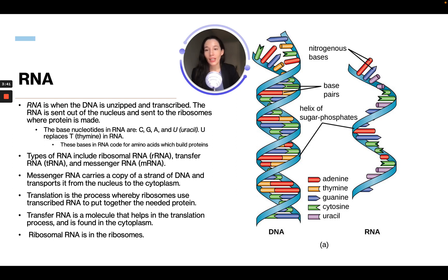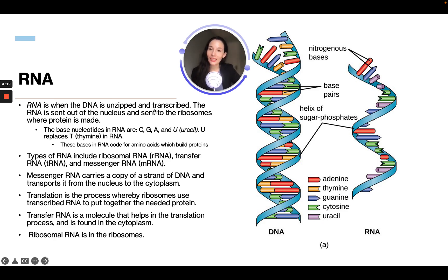Types of RNA include ribosomal RNA, transfer RNA, and messenger RNA. Messenger RNA carries a copy of a strand of DNA and transports it from the nucleus to the cytoplasm. Translation is the process where ribosomes use transcribed RNA to put together the needed protein. Transfer RNA is a molecule that helps in the translation process and is found in the cytoplasm. Ribosomal RNA is in the ribosome. The name of each RNA type tells you what it does.